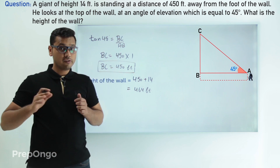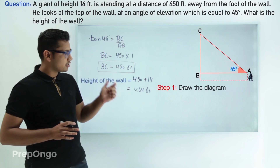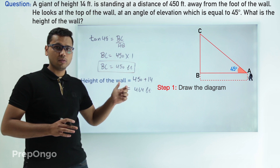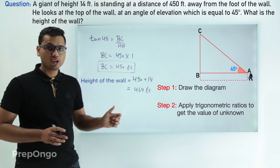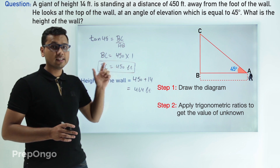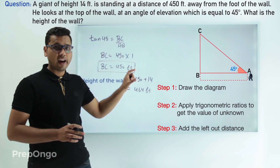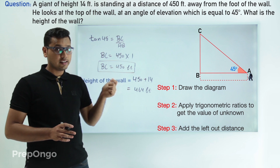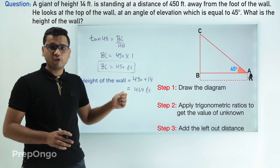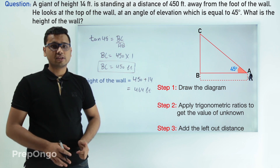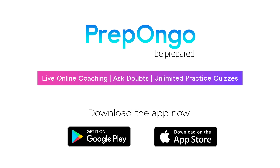Now in this question, first of all we drew the diagram to visualize the problem in a better way. Then we used trigonometric ratios to find the value of the unknown — in this case it was BC. Then we added the additional value to find the height of the wall. We added 14 to 450 to get the height of the wall as 464 feet. Excellent. Thank you.